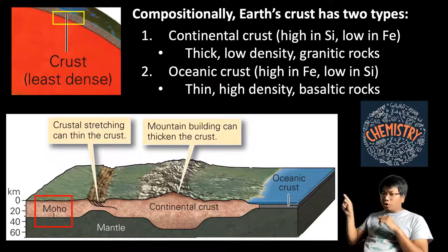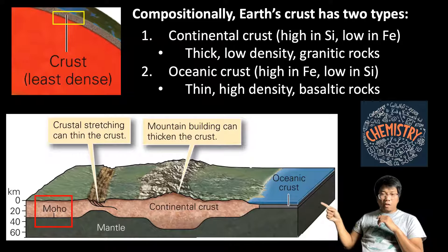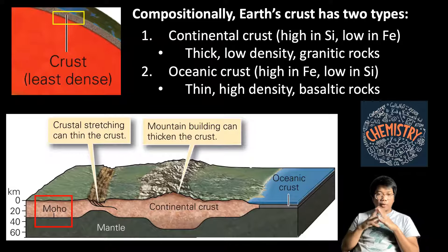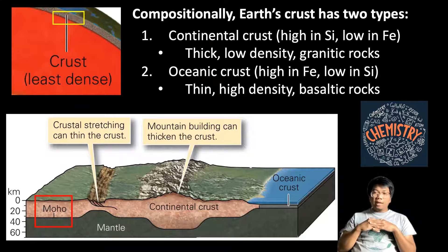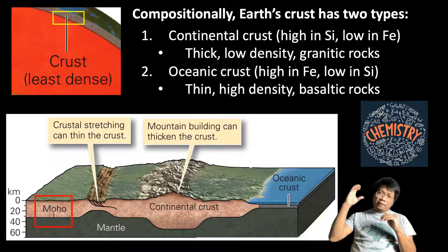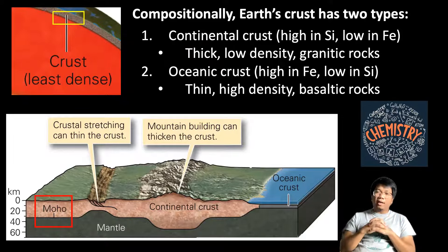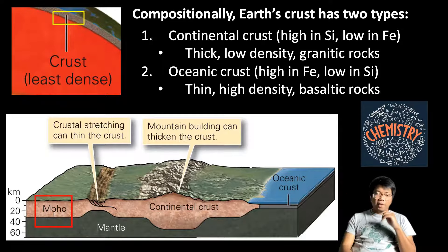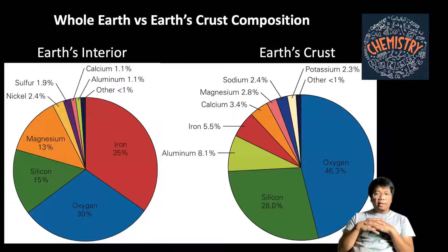Another important feature is that little red box — it is called the Moho. The Moho is a boundary that separates the crust of the Earth from the underlying mantle. Just remember that because it is an important feature we may talk about again in the future.